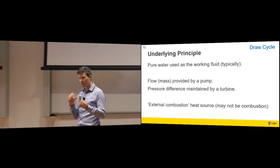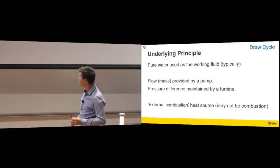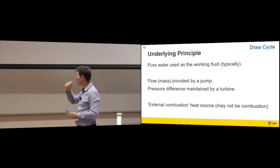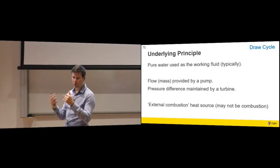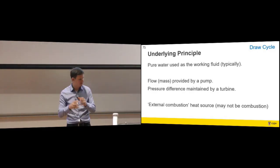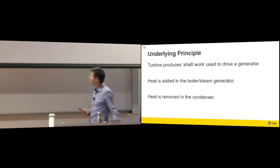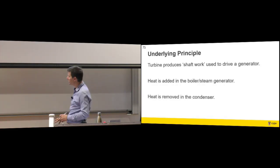The flow is provided by the pump, so the pump is forcing the whole process. We'll find the pump uses very little electricity, which is excellent. And then there's a pressure difference maintained by the turbine. We'll say external combustion uses a heat source, it may not be combustion, but you certainly don't use combustion inside the process like you do with an Otto cycle or a Brayton. So we were combusting the air we were working with. Here we're not using air, we're using a pure substance. The turbine's producing work, that's driving a generator. Heat's added in the boiler and heat's removed in the condenser. So they're our main work and heat processes. You're also putting a little bit of work into the pump as well.